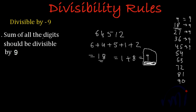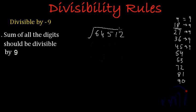So as per this rule and our calculation, this 64,512 should be divisible by 9. So let's check by dividing it by 9. So I am erasing all this extra calculation. So let's divide it by 9.